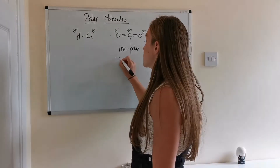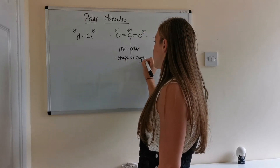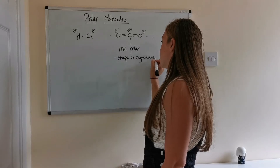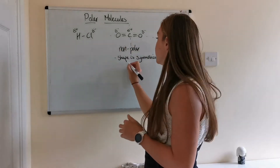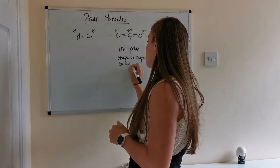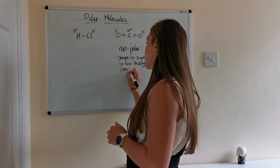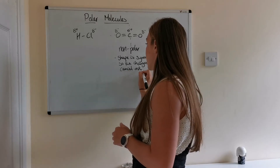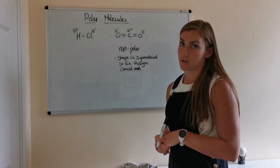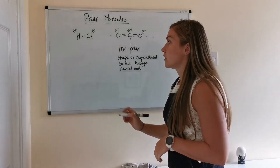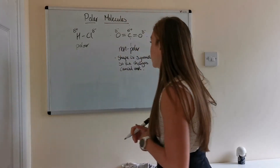Carbon dioxide is non-polar because its shape is symmetrical, so the dipoles — or the charges — cancel out. Because it's got a symmetrical shape, the charges cancel out and therefore it's non-polar. Hydrogen chloride, by contrast, was polar as a molecule.